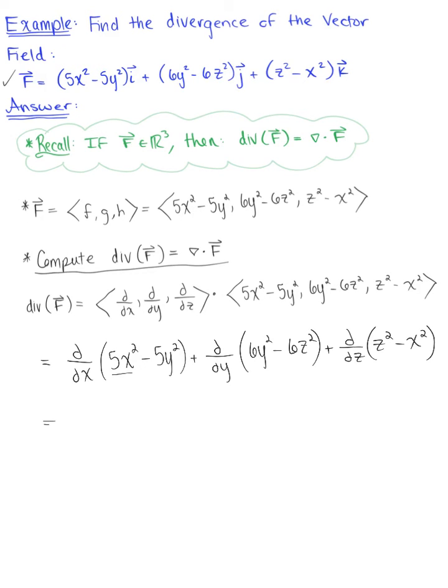Taking the partial derivative with respect to x, we're left with 10x, plus taking the partial derivative with respect to y, we are left with plus 12y. And last but not least, taking the partial derivative with respect to z, we're left with 2z.